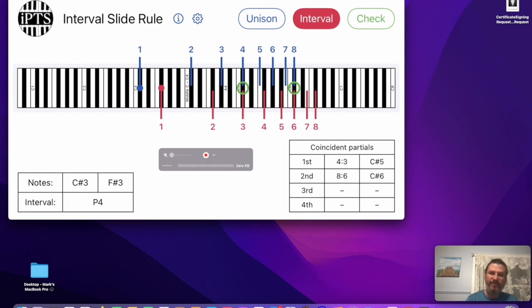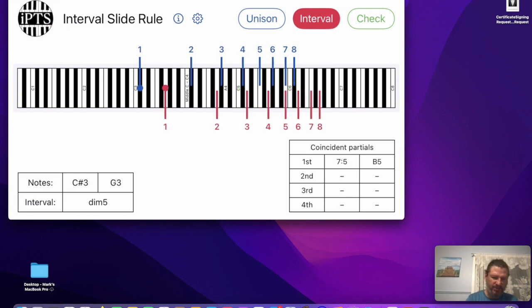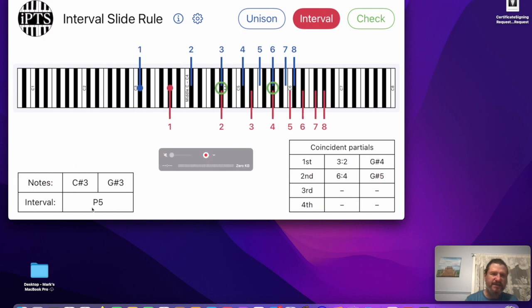Well, what about the fifth? C sharp to G sharp? You can see down here, it says it's a fifth. And now you can see the first coincident partial is just an octave above the top note.